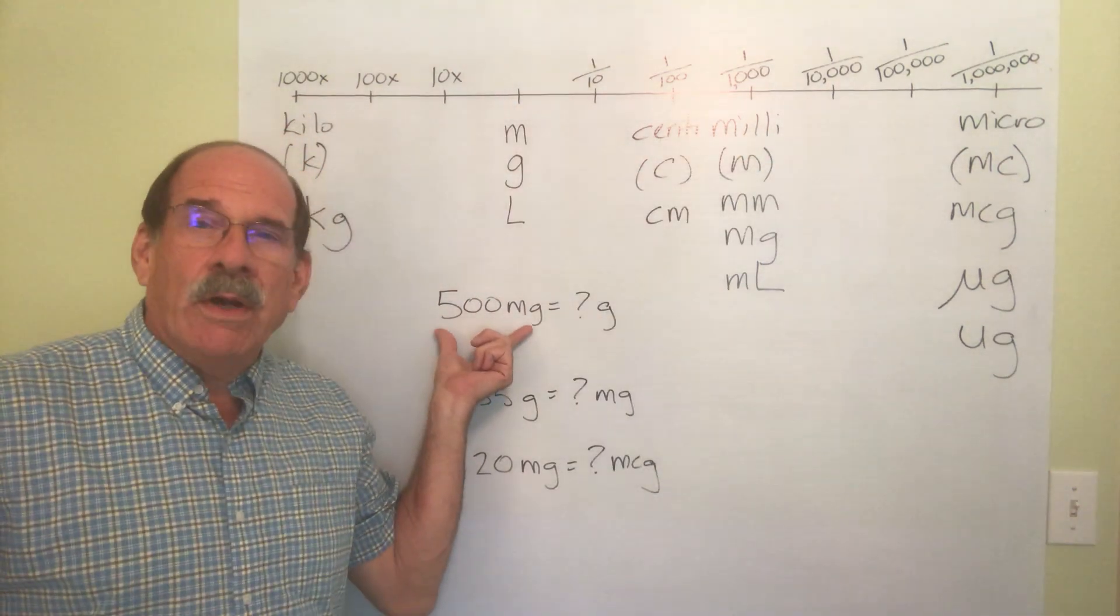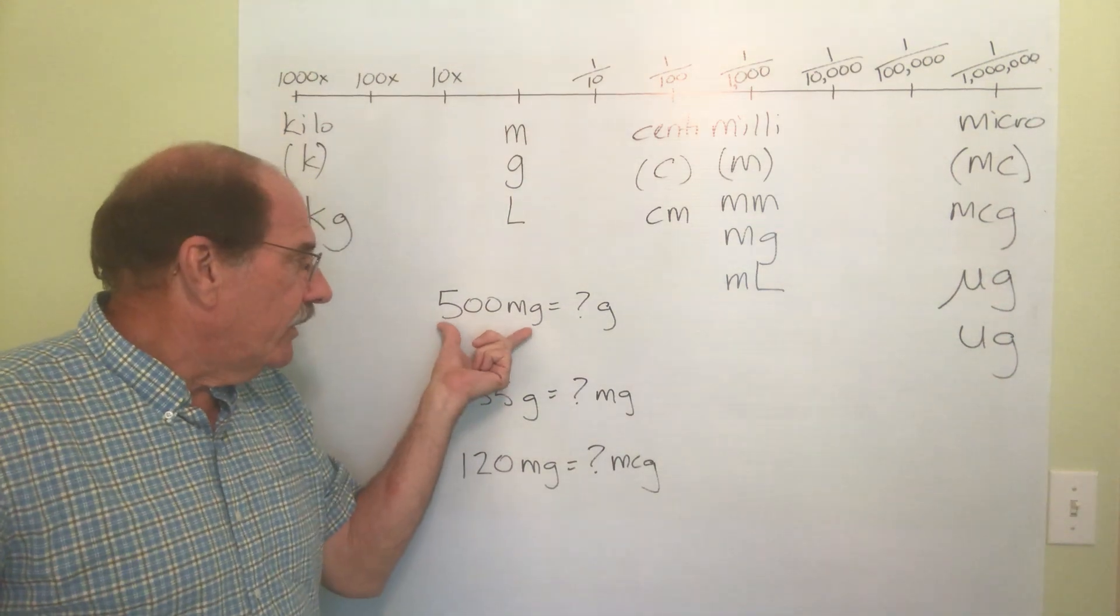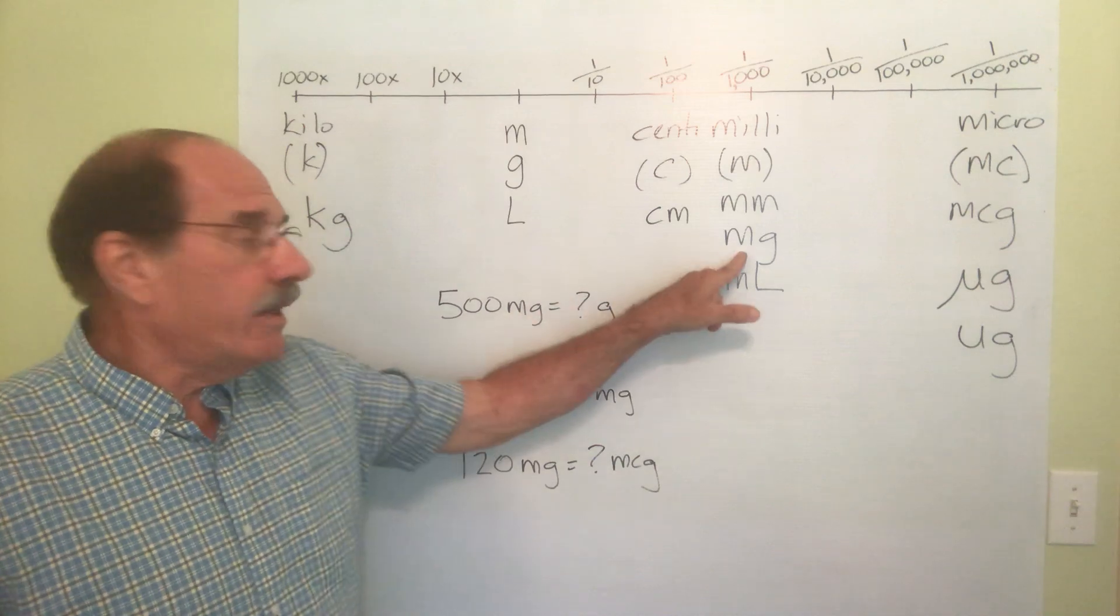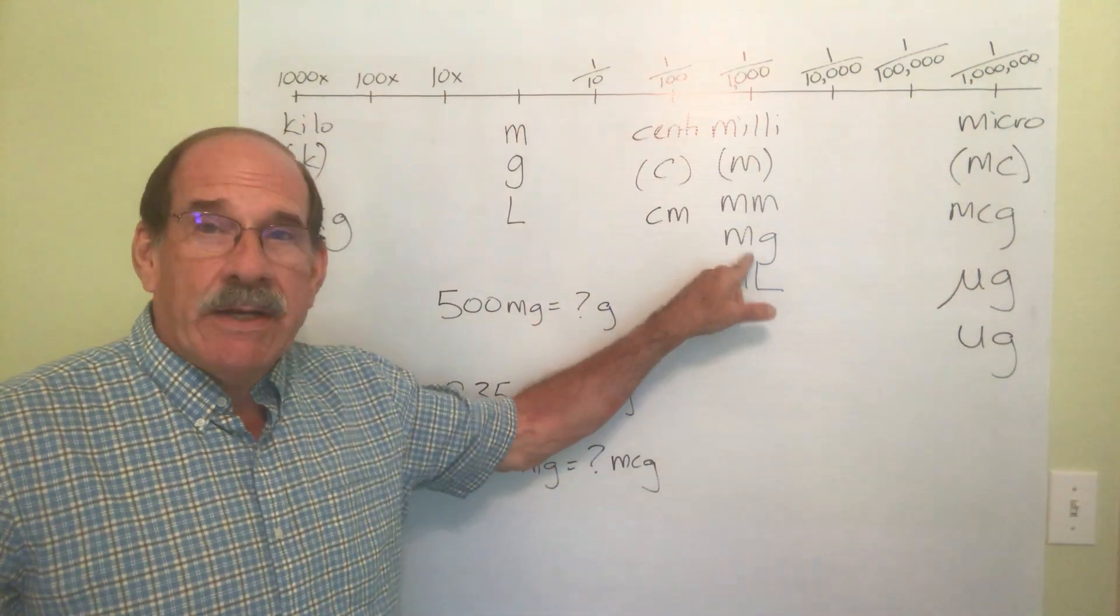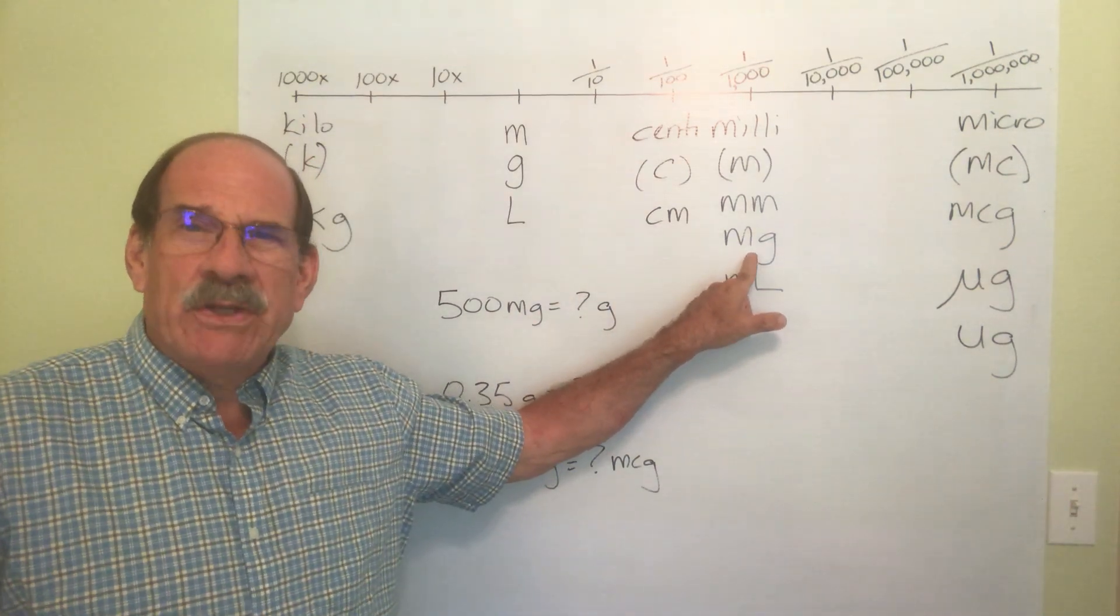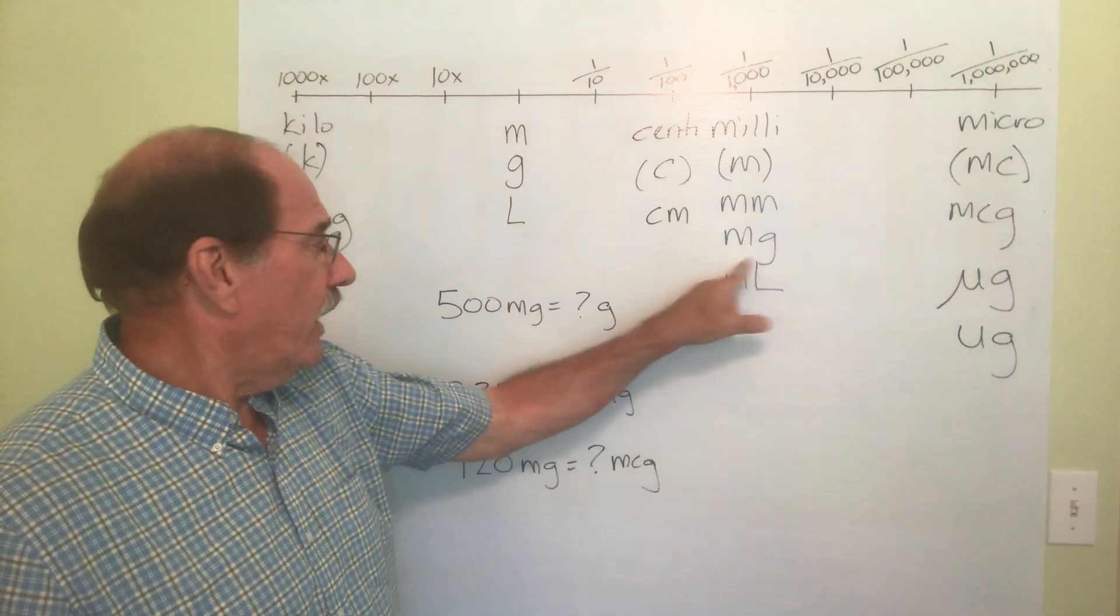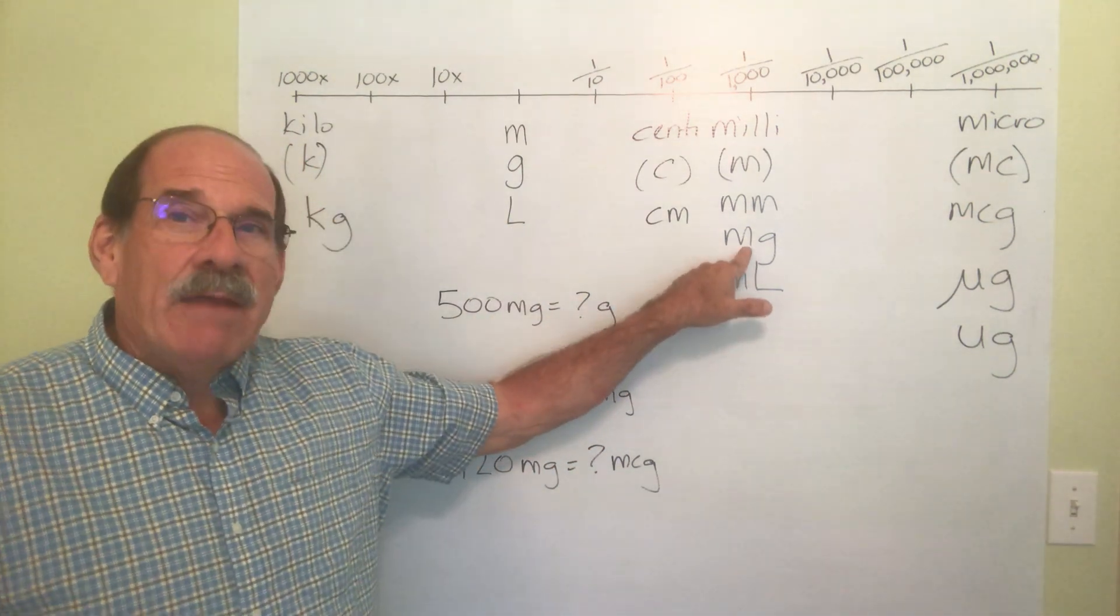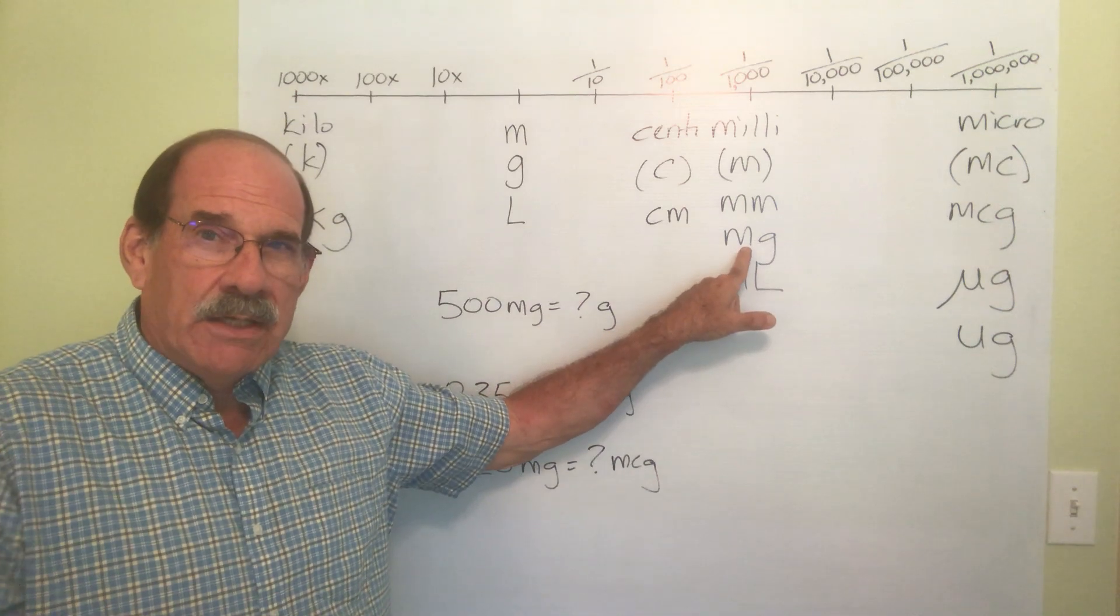Well on the chart, what do we know? Where are we right now? We're at 500 milligrams. We'll forget the number, we're at milligrams, that's right here. So this is where I am right now. Where am I trying to get to? Well, I'm trying to get to grams, it's over here.